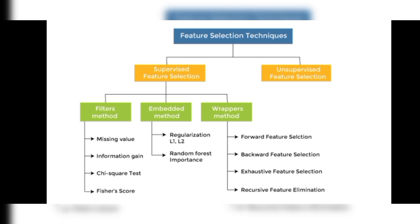What are the feature selection techniques? We have two types: supervised feature selection and unsupervised feature selection. In supervised feature selection, all the data is labeled and in a good format. Unsupervised feature selection does not have a defined format. In supervised feature selection we have three methods: filter methods, embedded methods, and wrapper methods. We are going to use the wrapper method, which is the easiest to work with compared to filter and embedded methods.